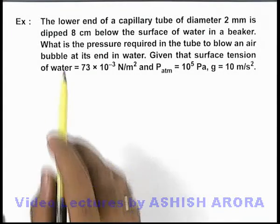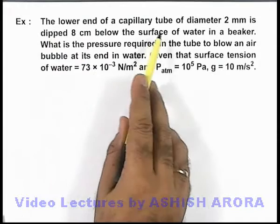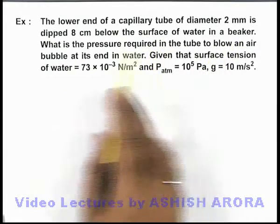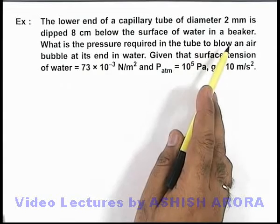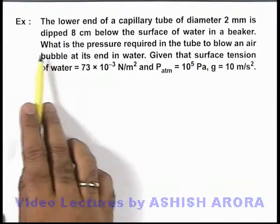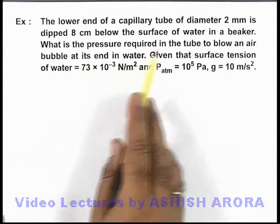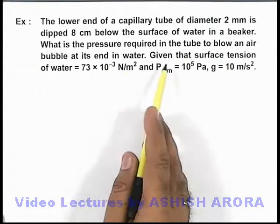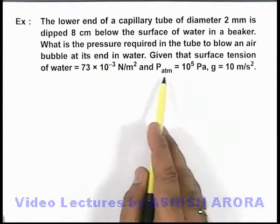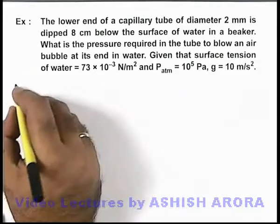In this example, we are given that the lower end of a capillary tube of diameter 2 mm is dipped 8 centimeters below the surface of water in a beaker. We are required to find what is the pressure required in the tube to blow an air bubble at its end in water, and the data given to us is surface tension of water, atmospheric pressure, and the value of gravity.